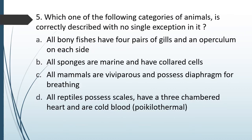Question No. 57: Which one of the following categories of animals is correctly described with no single exception? Option A — All bony fishes have 4 pairs of gills and an operculum on each side. Option B — All sponges are marine and have collared cells. Option C — All mammals are viviparous and possess a diaphragm for breathing. Option D — All reptiles possess scales, have a 3-chambered heart, and are cold-blooded. The correct answer is Option A — all bony fishes have 4 pairs of gills and an operculum on each side.